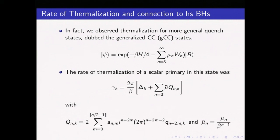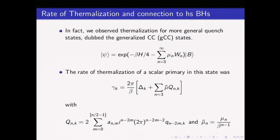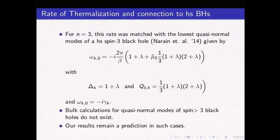This connects to higher spin black holes. In the case of the W3 charge, there is a calculation by Narayan of quasi-normal modes corresponding to a higher-spin-3 black hole, and from our calculation, identifying delta_k with 1+lambda and Q3_k and omega_k accordingly, this exactly reproduces the rate of decay of a scalar primary in the spin-3 black hole background. No calculations exist for spin greater than 3 black holes, so all results for quasi-normal modes of higher spin black holes remain at the level of predictions.